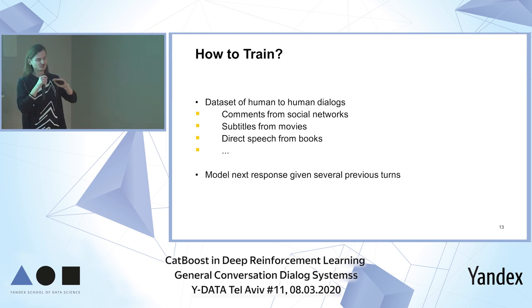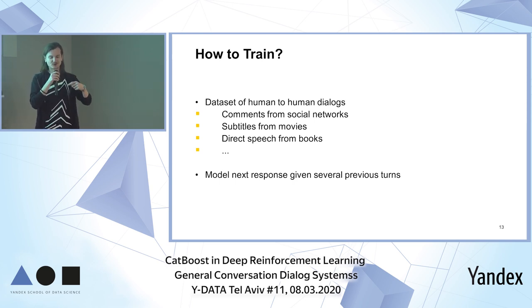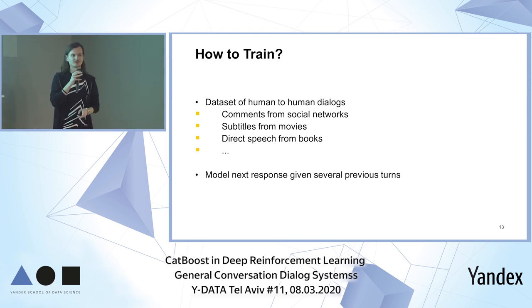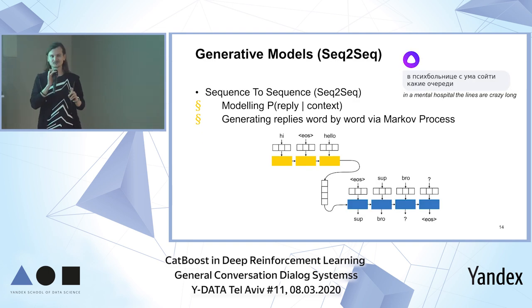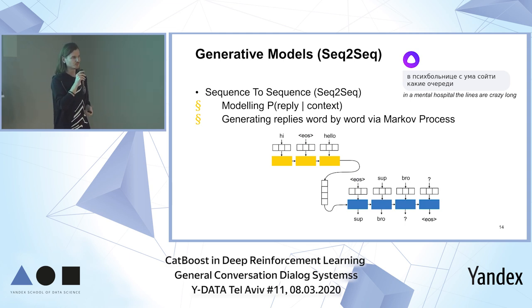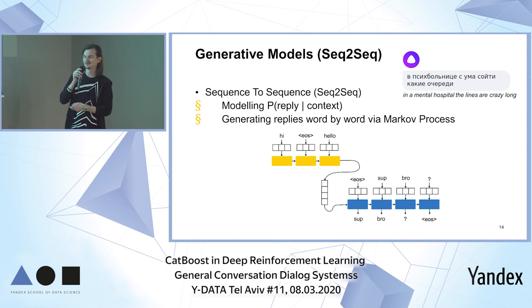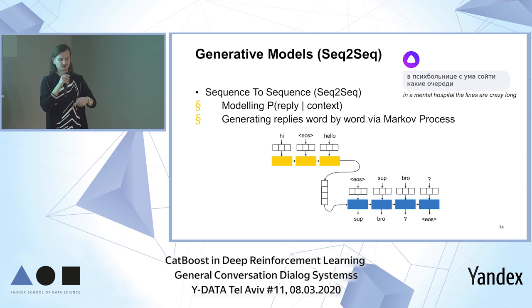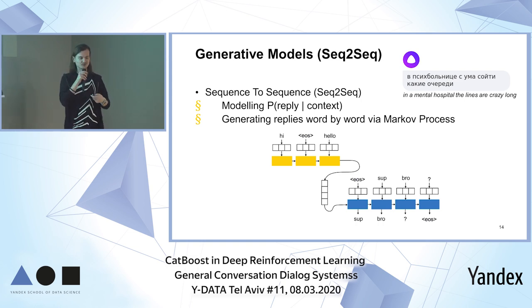The state of the art is to predict the next utterance. You have a context of a dialogue — several utterances — and you need to come up with the next one. It's similar to language modeling where we predict the next word, but here we predict the next sentence. There are two main approaches. One is called generative models — sequence-to-sequence models — which borrow from machine translation. Basically, it tries to translate the context of the dialogue into a response, generating it word by word via an autoregressive Markov process, subtoken by subtoken to be more exact.